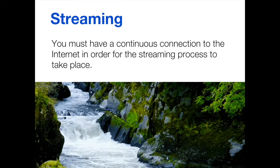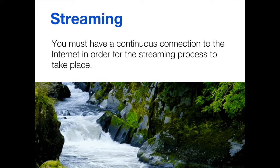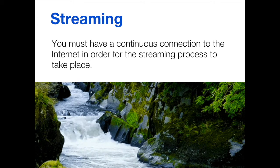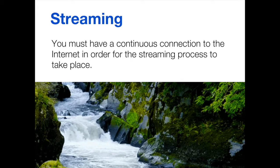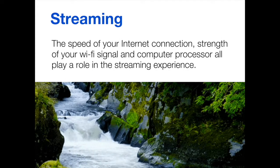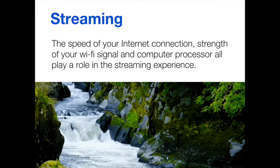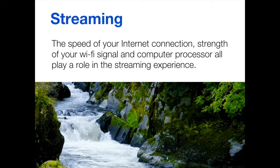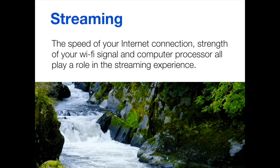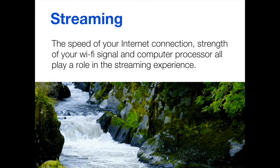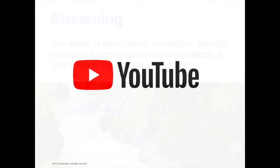Think of it like a river or a creek that has a constant flow of water — it's the same concept here, except instead of water, it's data. So you must have a continuous connection to the internet in order for this data to flow to your computer. The speed of your internet connection, the strength of your Wi-Fi signal, the computer processor — all of this has a role in the streaming process. If one of these is slow, it's going to slow down the process of that data being flowed from the company's computers to your computer or television at home. I think the perfect example of streaming, and it's something that we've all done, is YouTube.